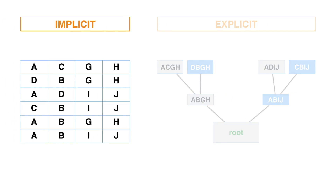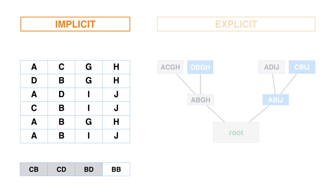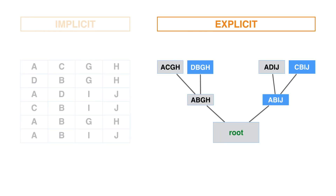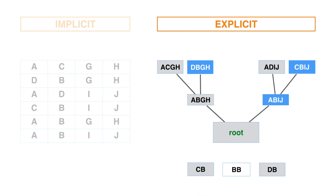Without an explicit evolution model, pairs CB, CD, and DB are all counted as potential mutations. But with the evolution model depicted in the phylogenetic tree, only CB and DB are point accepted mutations.